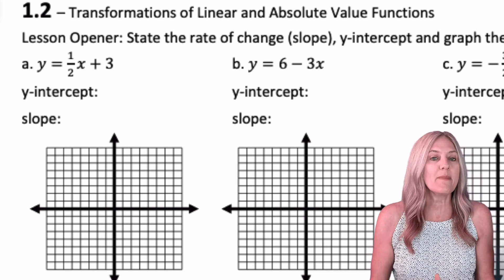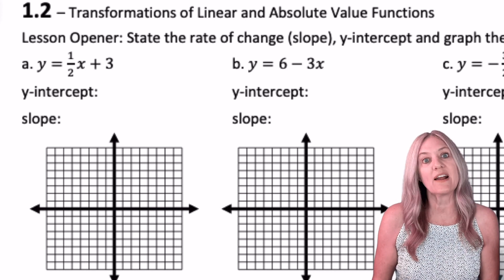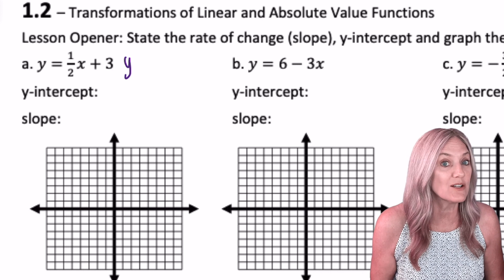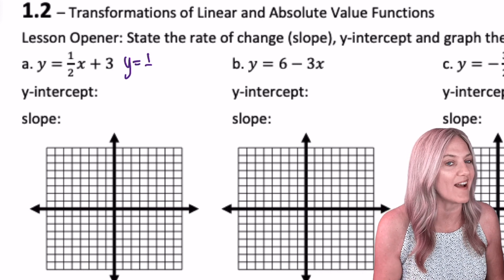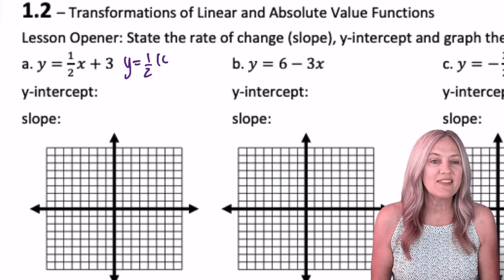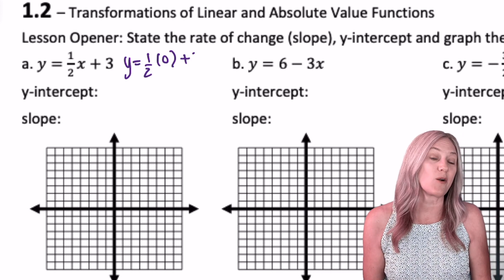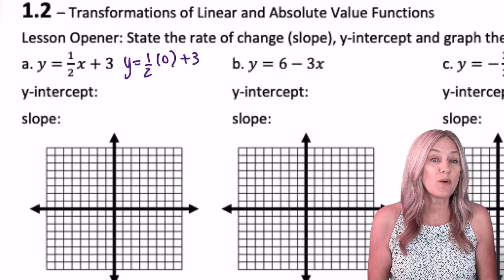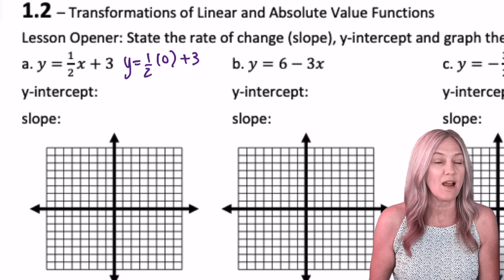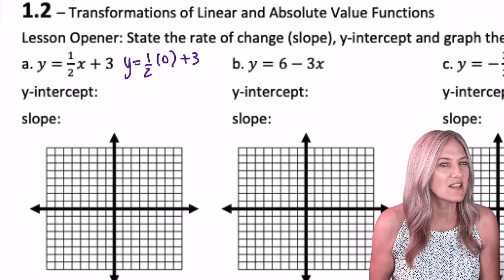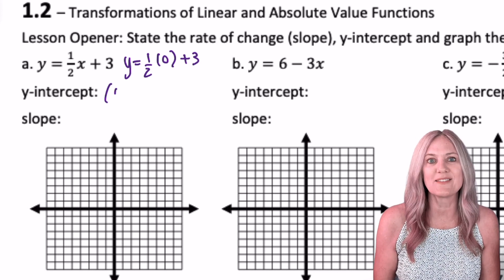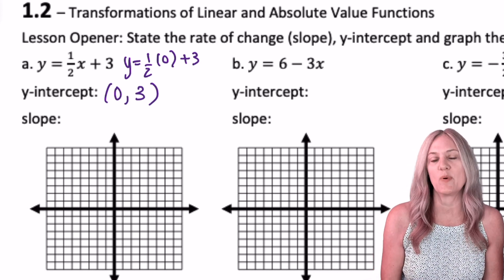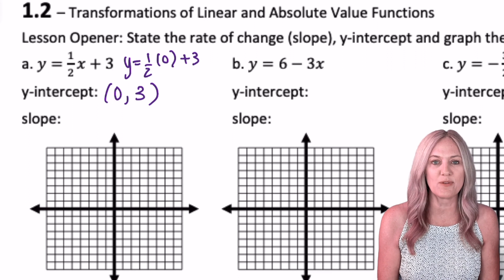It makes sense when I'm finding a y-intercept that I plug in zero for x. In this case, our y-intercept is zero, three. Always identify it as a point. Let's plot that point, zero, three.